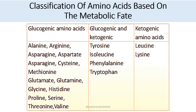There are two purely ketogenic amino acids: leucine and lysine. The glucogenic and ketogenic category includes tyrosine, isoleucine, phenylalanine, and tryptophan. All other amino acids are part of the glucogenic amino acid group.